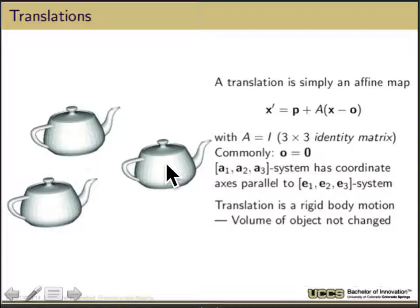If I want to move stuff around in 3D, translation is simply a very special affine map where the matrix A is the identity map and we start at the origin, so I can move stuff around. Translation is a rigid body motion — the volume of the object doesn't change — and of course this makes it useful if I want to place things in my graphics world.